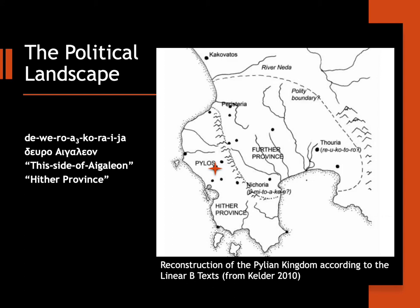For instance, in the archives from the Palace of Pylos — marked on the slide with an orange star — there is reference to a physical barrier, the Aigalion mountain range, which separated the kingdom into two provinces: this side of the Aigalion and the other side of the Aigalion. But things are not always as clear as this.